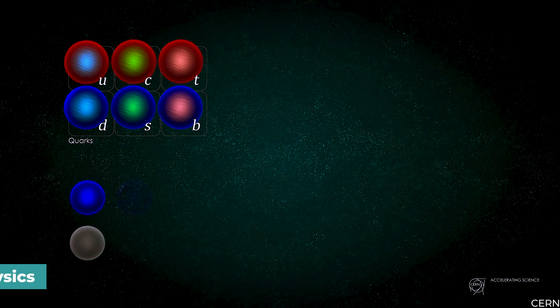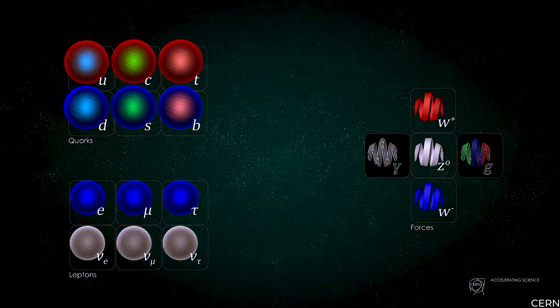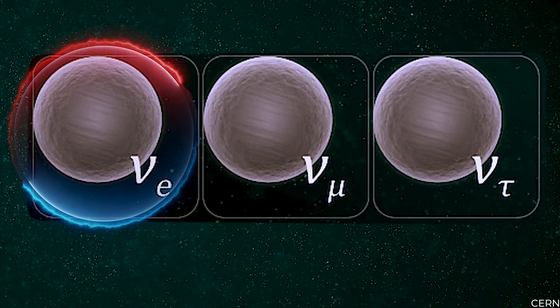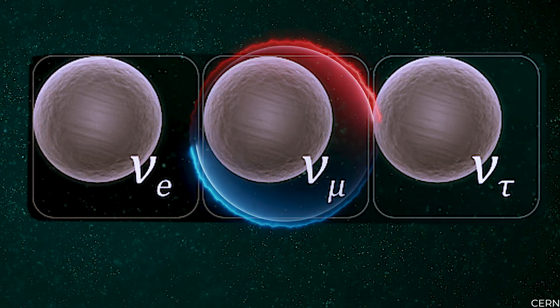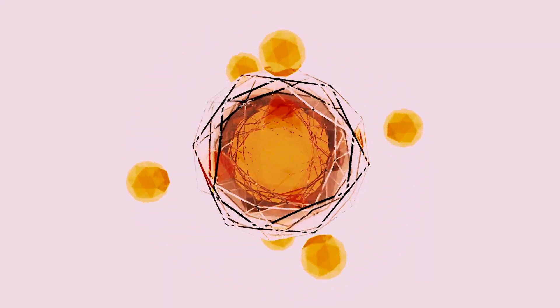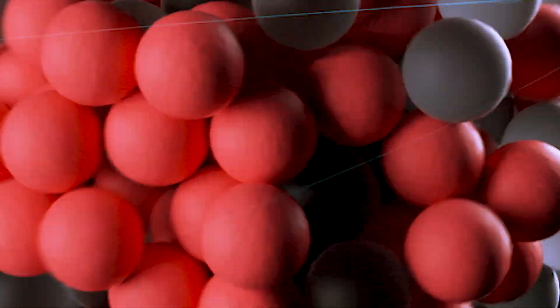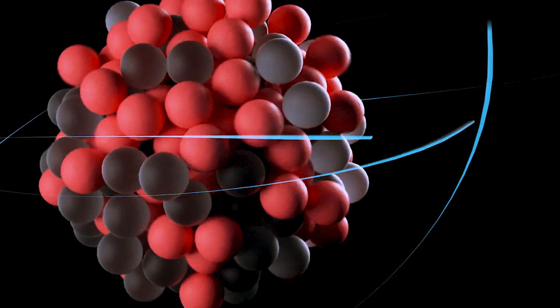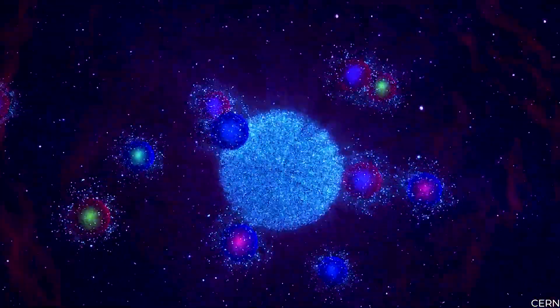According to the Standard Model of particle physics, which provides the mathematical foundation for scientists' understanding of the subatomic world, particles should decay into products that include electrons at the same rate as they decay into products that include the muon, a heavier cousin of the electron. Instead of decaying into electrons and muons at equal rates as predicted by the model, the B mesons are deviating toward the electron-producing decay pathway.